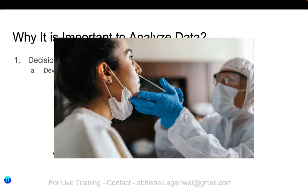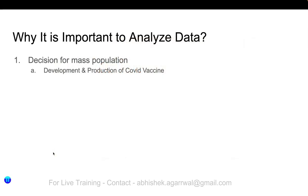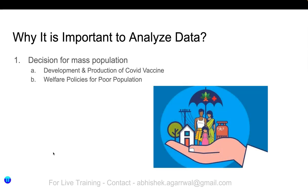Another example is the COVID test. Private companies and government organizations collaborated to develop the COVID test so that on a mass population level they could administer that test. That is another example of why they have to make a data-driven decision for mass population — to save lives.